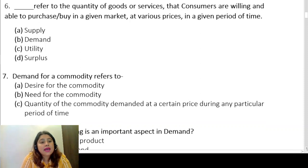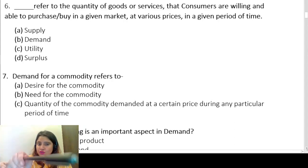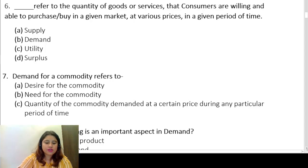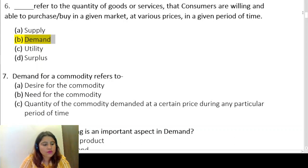Question six: dash refers to the quantity of goods or services that consumers are willing and able to purchase or buy in a given market at various prices in a given period of time. The answer here can be related directly to the definition given in your ICSI module — this is the definition of demand.